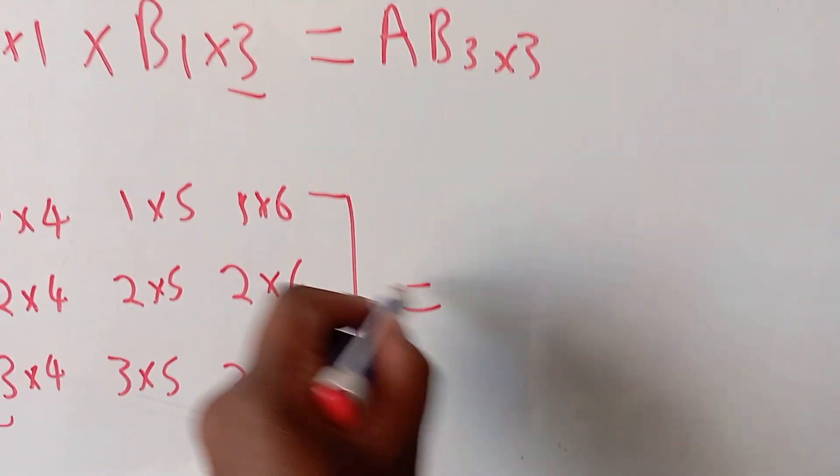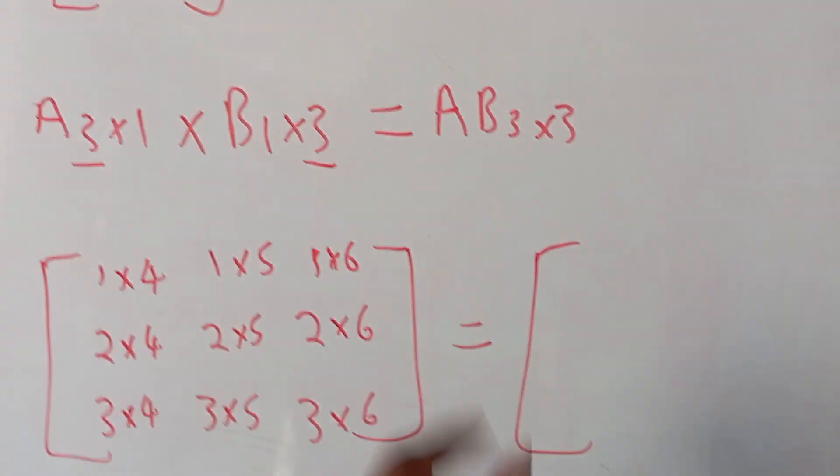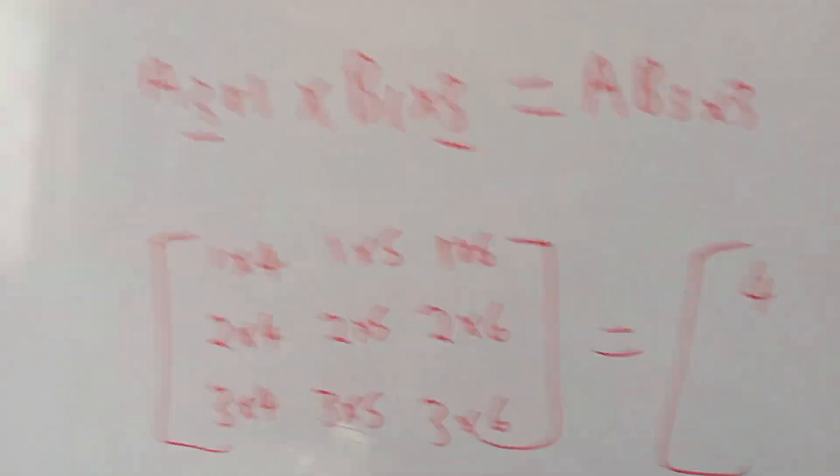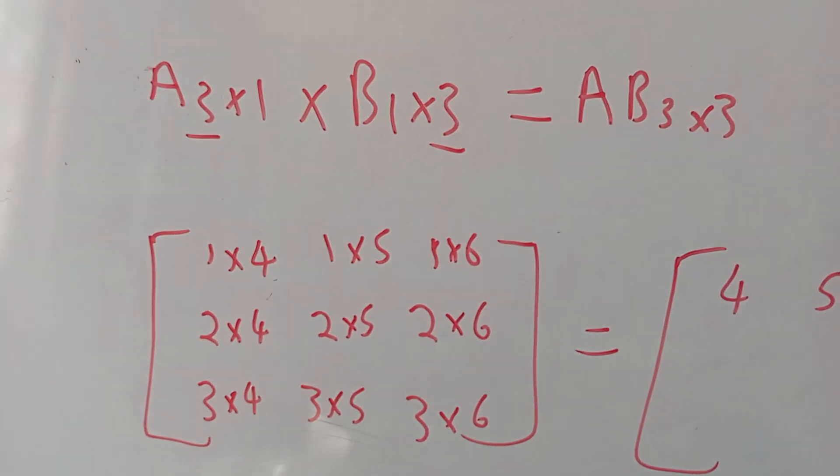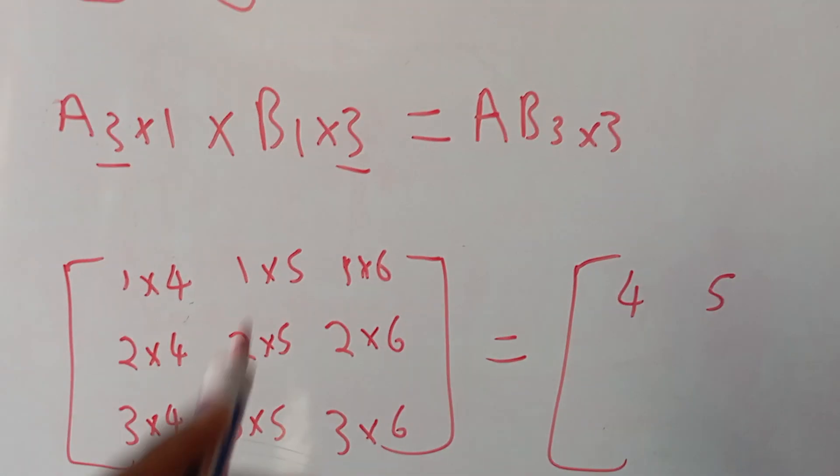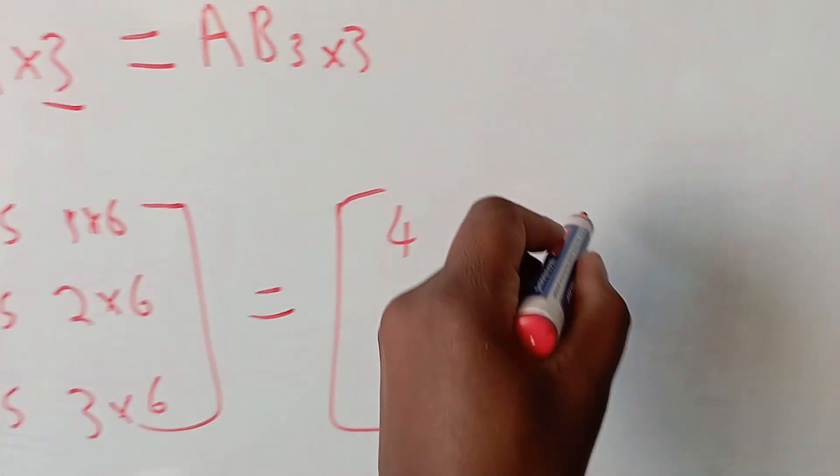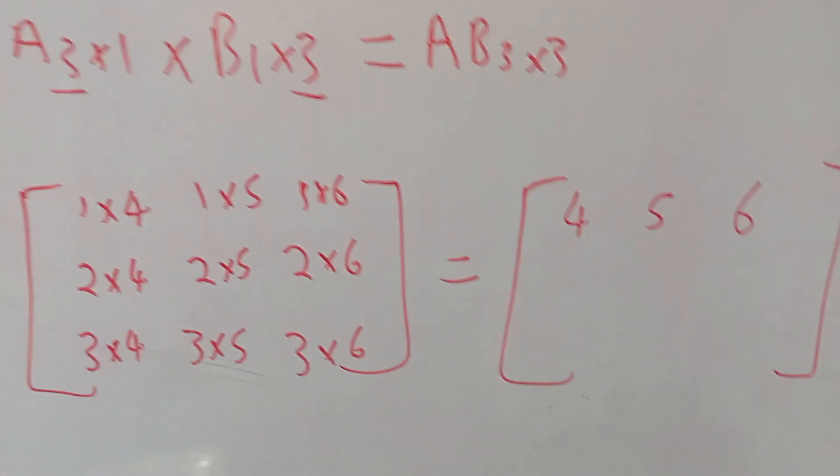Which is equal to - for the final matrix - 1 times 4 is 4, 1 times 5 is 5, and 1 times 6 is 6. So 4, 5, 6 for the first row.